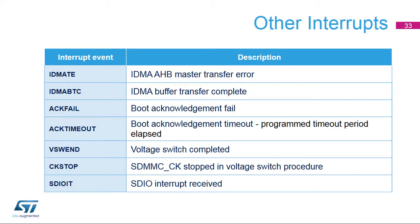Here is an overview of interrupt events related to IDMA, boot, voltage switch, and SDIO interrupt. An IDMA master AHB transfer error is signaled by IDMATE. Correct transfer of a complete data buffer is signaled by IDMABTC, used with double buffer mode. Boot acknowledgement errors are signaled with ACK-fail and ACK-timeout. Voltage switch progress is signaled with VSW-end and CK-stop. The SDIO interrupt is signaled with SDIO-IT.